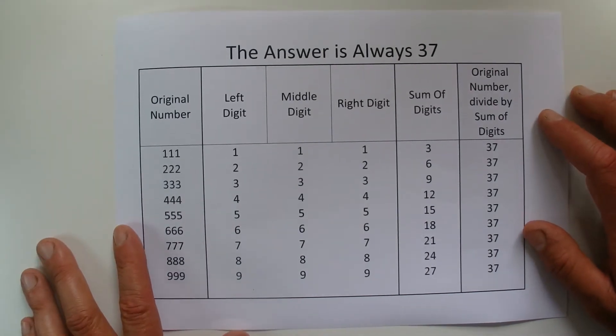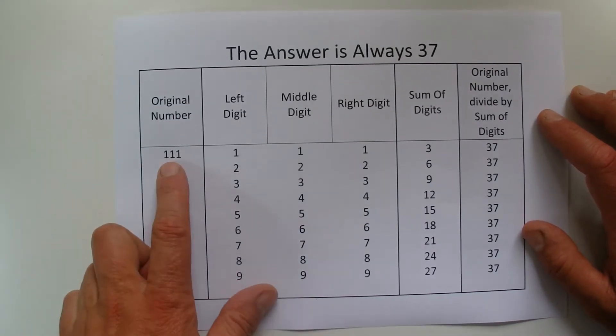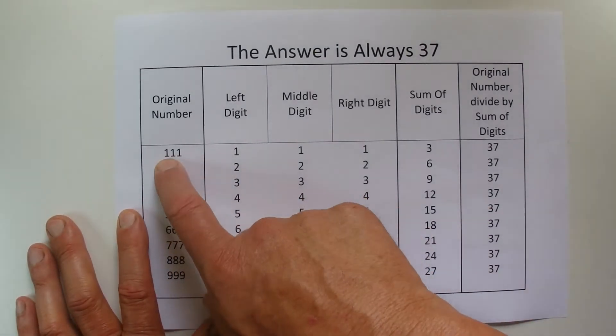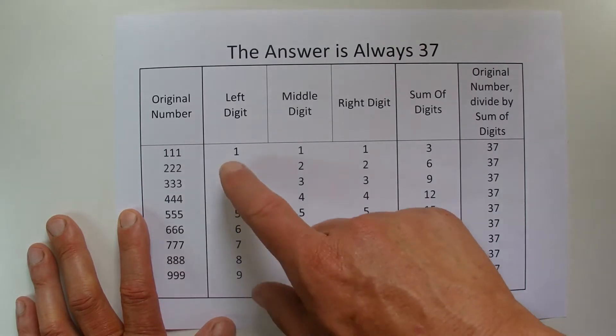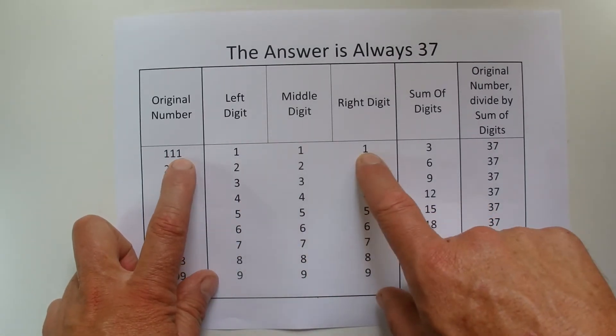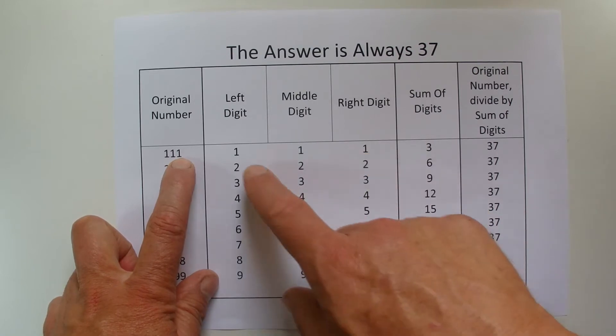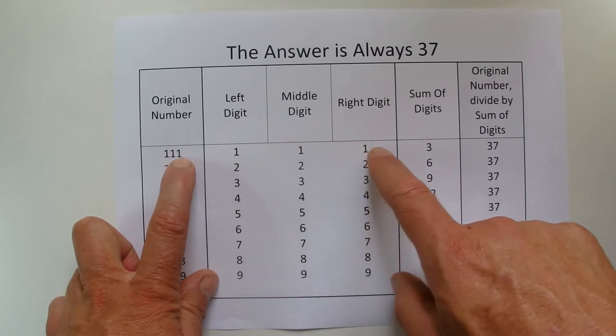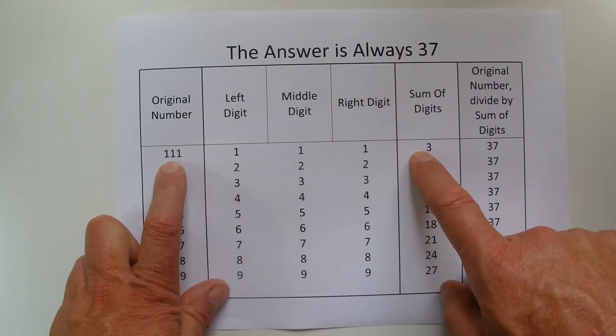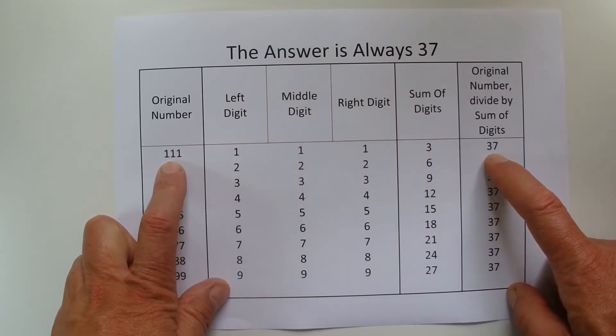So I'll just work through one of those numbers to show you how this calculation works. So the original number there of 111, the left digit is 1, the middle digit is 1, and the right digit is also 1. If you add 1 plus 1 plus 1 equals 3, and you have 111 divided by 3 equals 37.